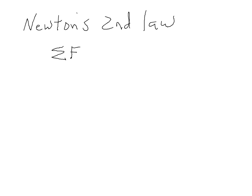Newton's second law can be written in equation form like this. Let's go over each term separately. This first symbol is a capital sigma, and it stands for 'sum of' — so you want to add up everything. F stands for force, not surprisingly, since Newton's second law is about force. M stands for the mass of the object, and A is the acceleration, just like it was in previous chapters.